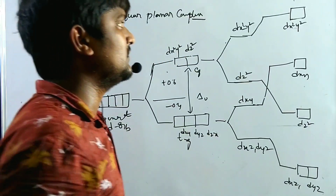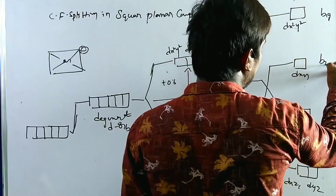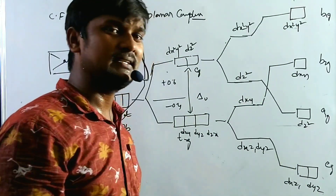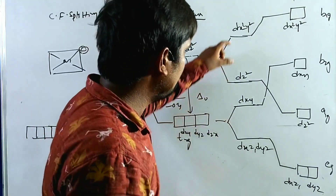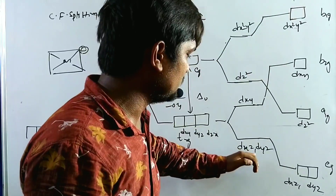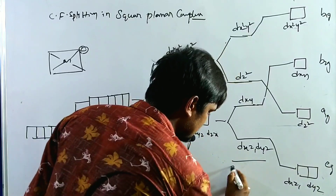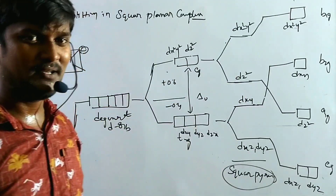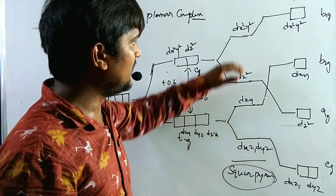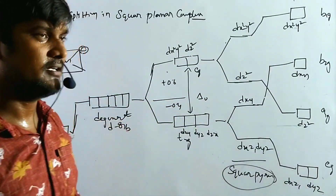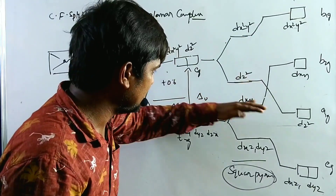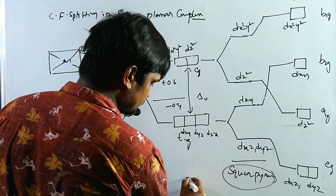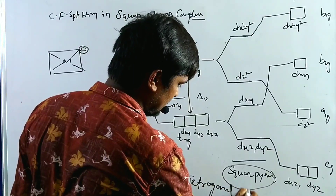Mulliken symbols for the square planar complex orbitals are: B1g (dx²−y²), B2g (dxy), A1g (dz²), and Eg (dxz, dyz). With these symbols, we can discuss Jahn-Teller distortion. This energy diagram also applies to tetragonal elongation, where the Z-axis ligands move away from the metal center, similarly giving the same orbital energy ordering.